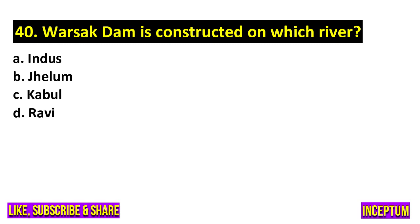Question number 40. Warsak Dam is constructed on which river? In the options there are Indus River, Jhelum River, Kabul River, Ravi River. And the right one is option C, Kabul River.